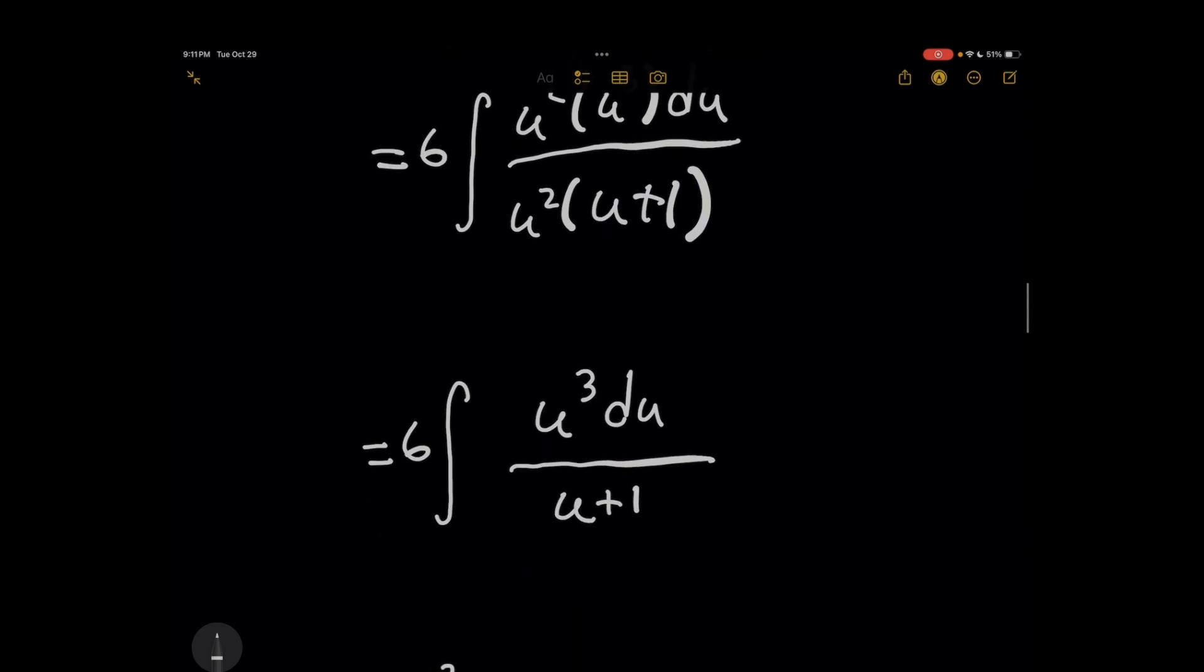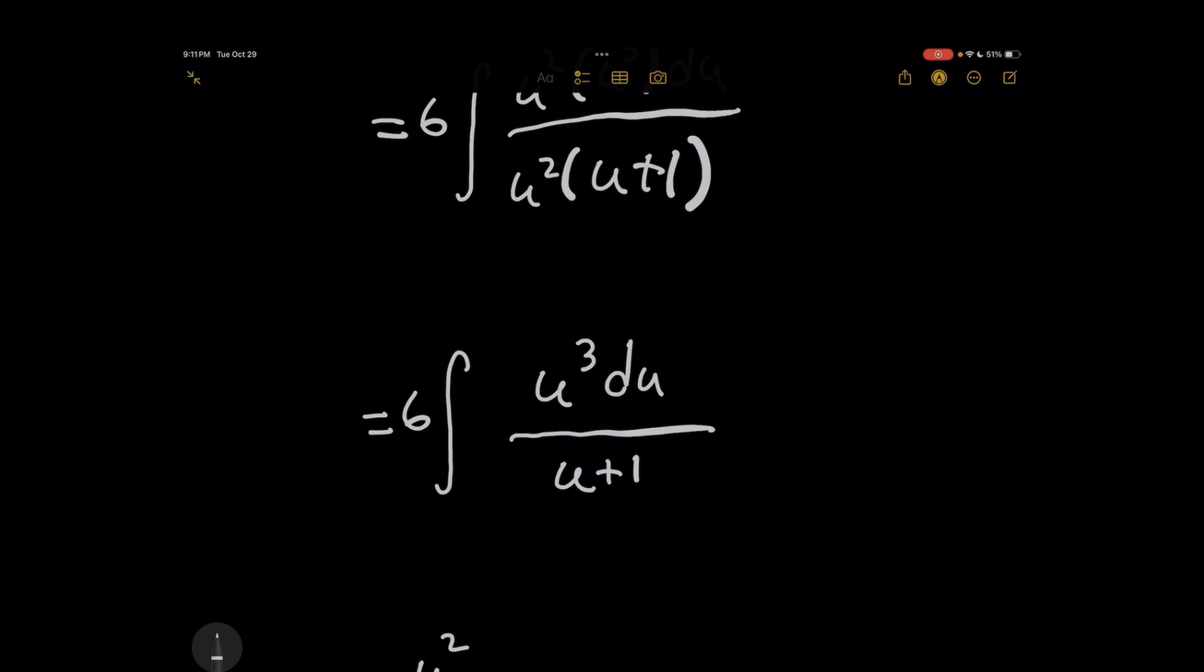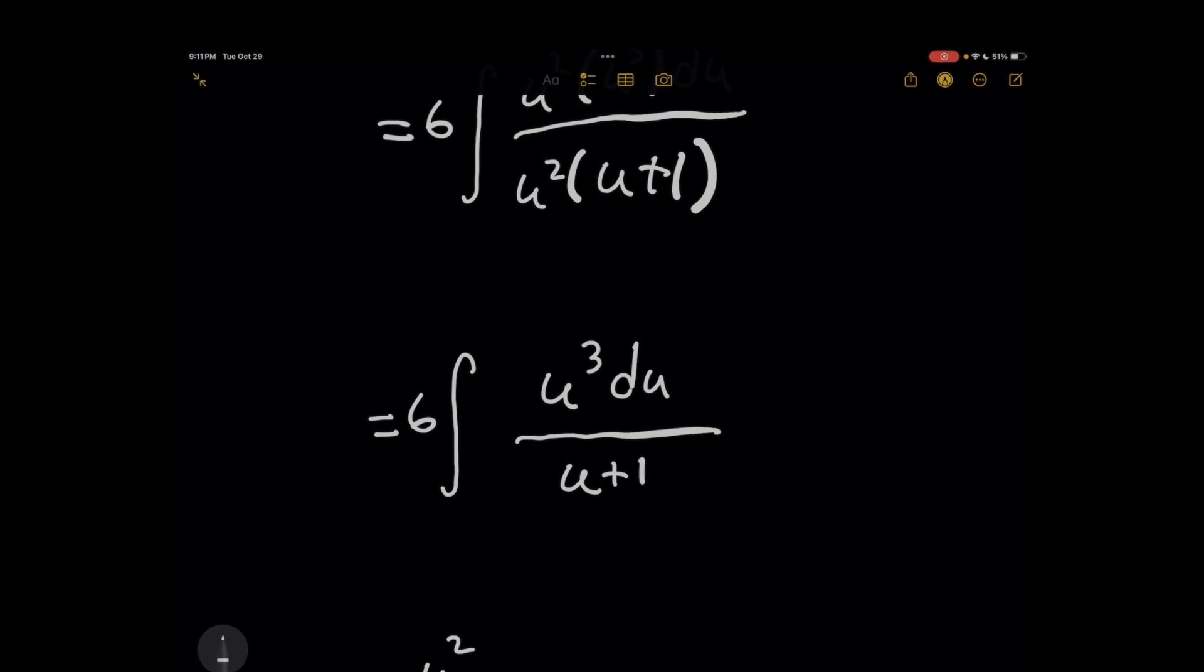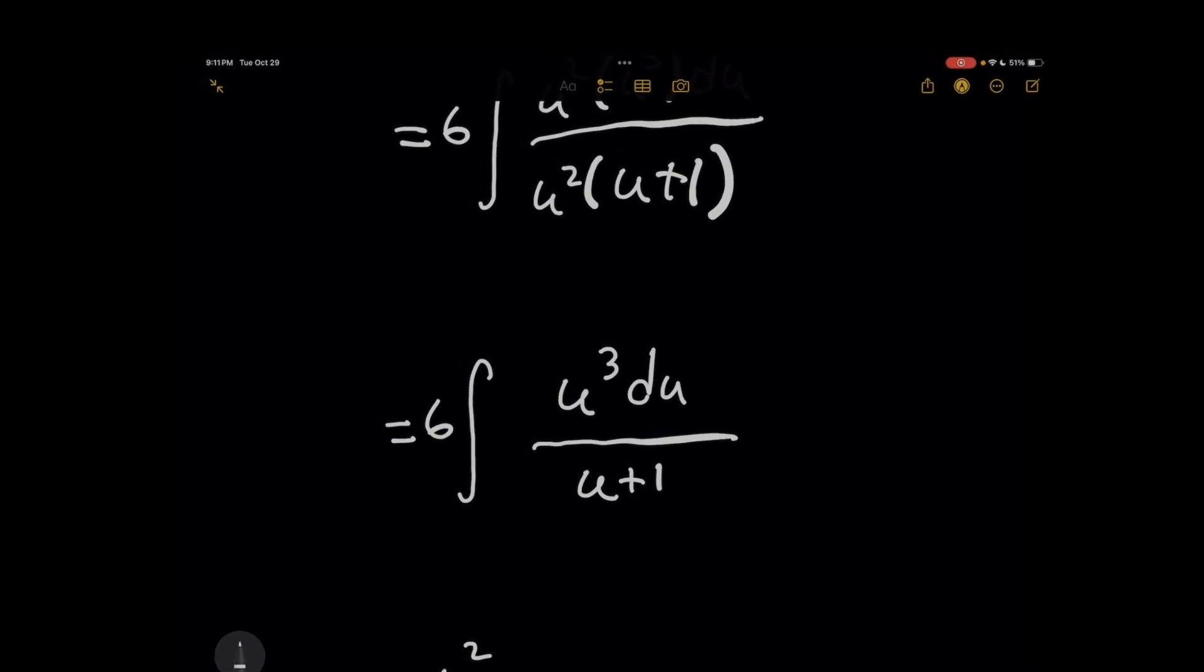And maybe you got stuck because now you're seeing that the numerator has a power that's greater than the denominator. The way you want to deal with this now is you want to break this fraction up into parts where each individual part's easier to integrate. And we're going to use a method known as polynomial division, otherwise known as long division.